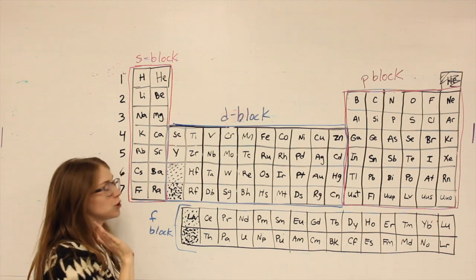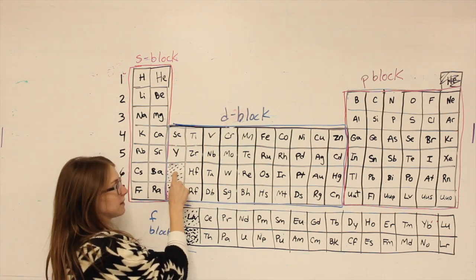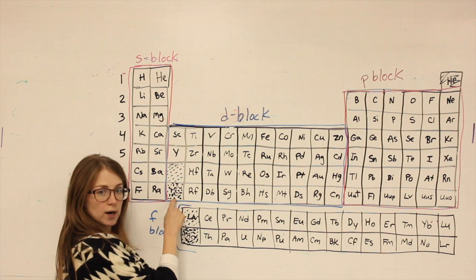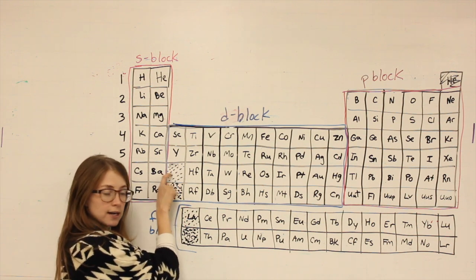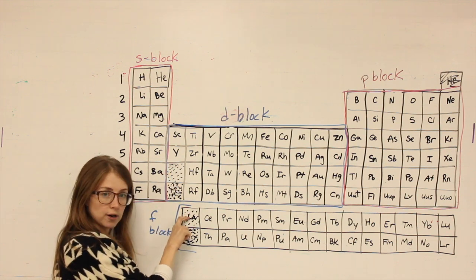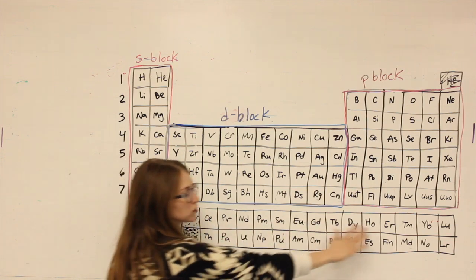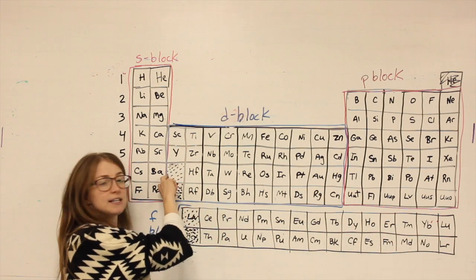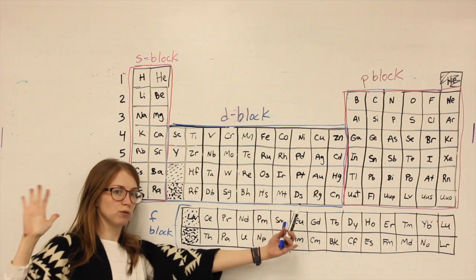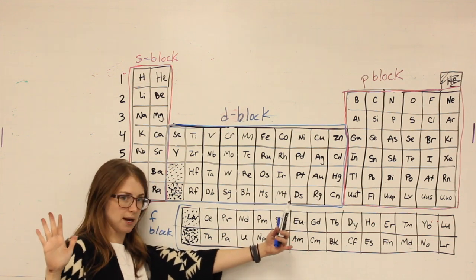Something else to keep in mind, on your periodic tables there is a light gray square and a dark gray square. Those light and dark grays correspond with these light and dark grays down here. In reality this whole section belongs shoved in here. It would just make our periodic table really long and it wouldn't fit on a piece of paper.